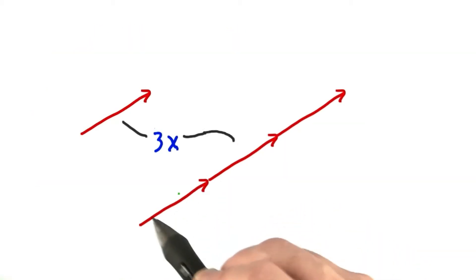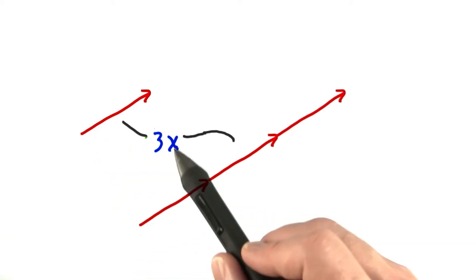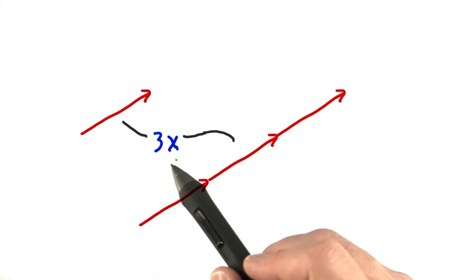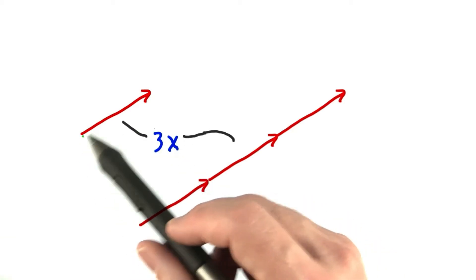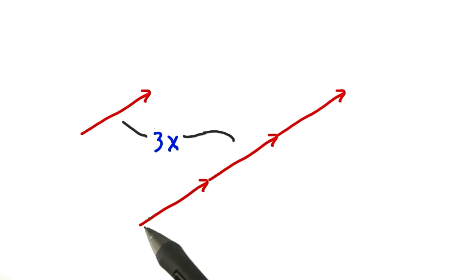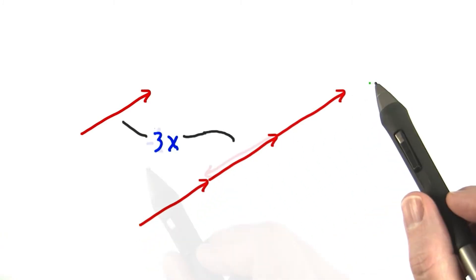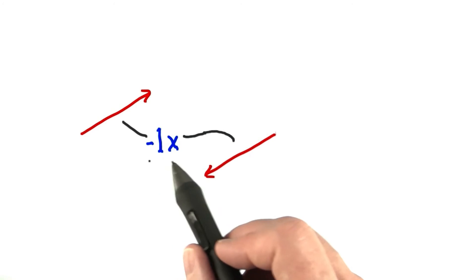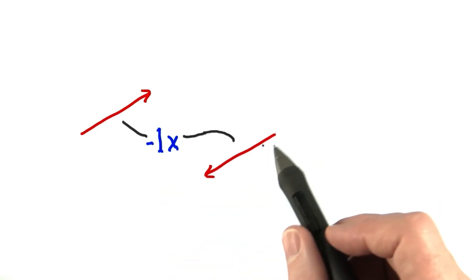The other thing commonly done with vectors and points is to multiply them by a scalar — that is, a number. Multiplying a vector by a scalar is clear enough: you want to describe moving further in a given direction. If you multiply by negative one, you reverse the vector's direction.